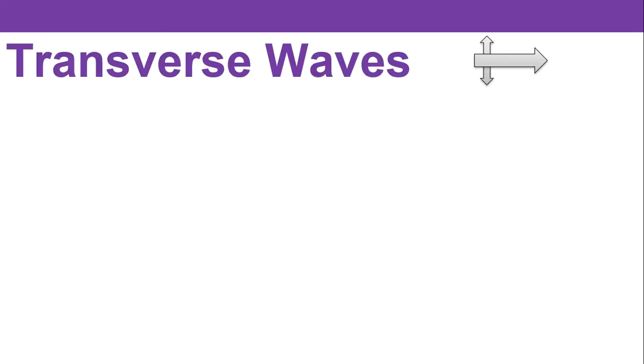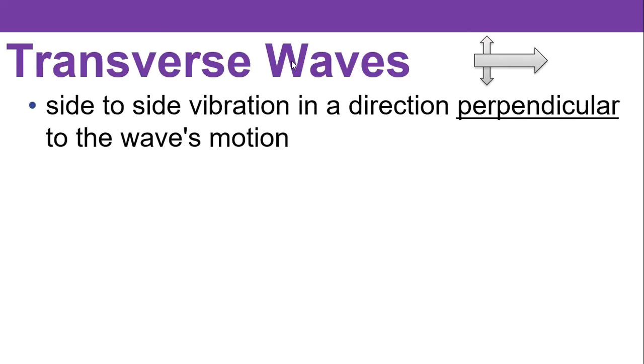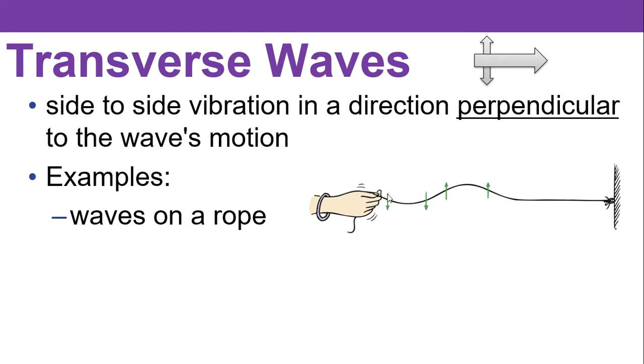For transverse waves you have a side-to-side vibration in a direction perpendicular to the wave's motion. You know, you probably learn by example like me. Here is an example of a transverse wave. Imagine you have a rope and you create a disturbance up and down, and you create this crest that propagates along the rope. You'll notice that you wiggled it up and down this way, but the wave moved to the right. There's your perpendicular example.